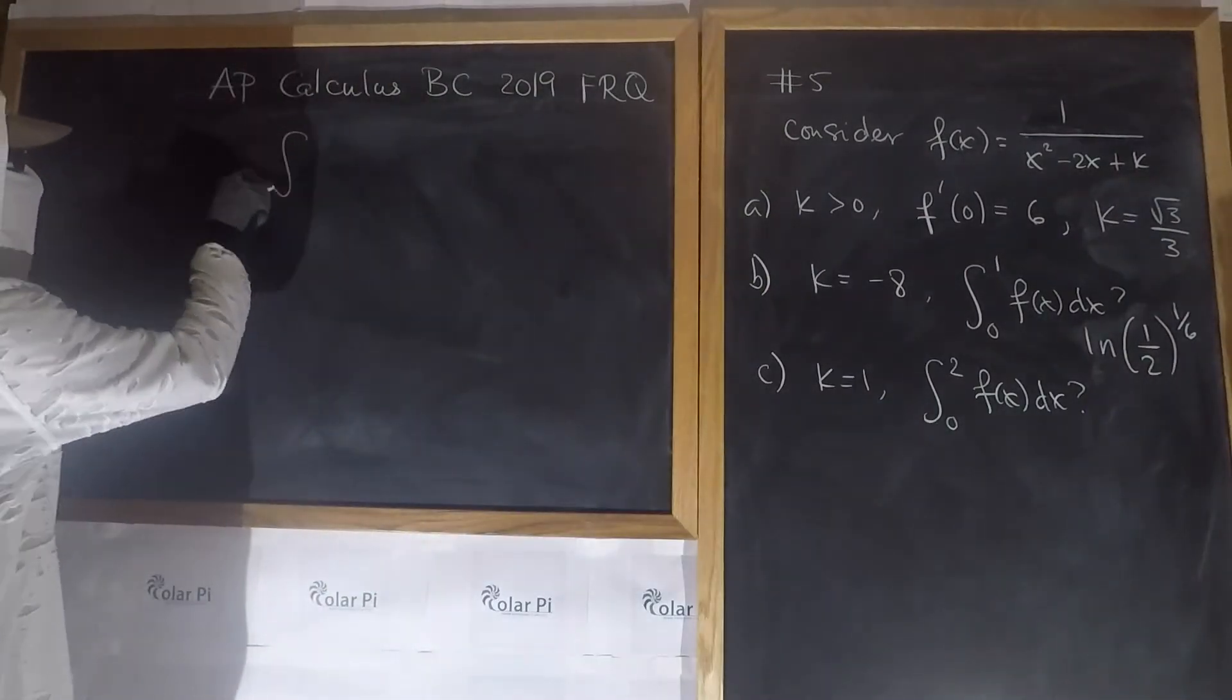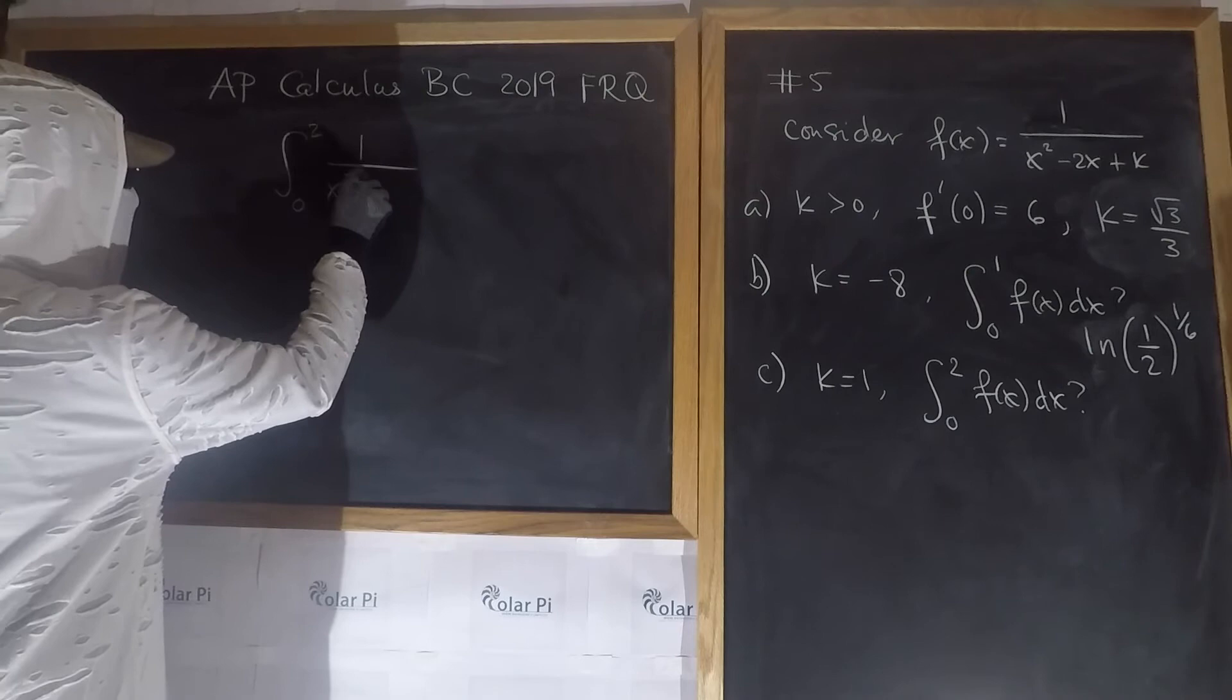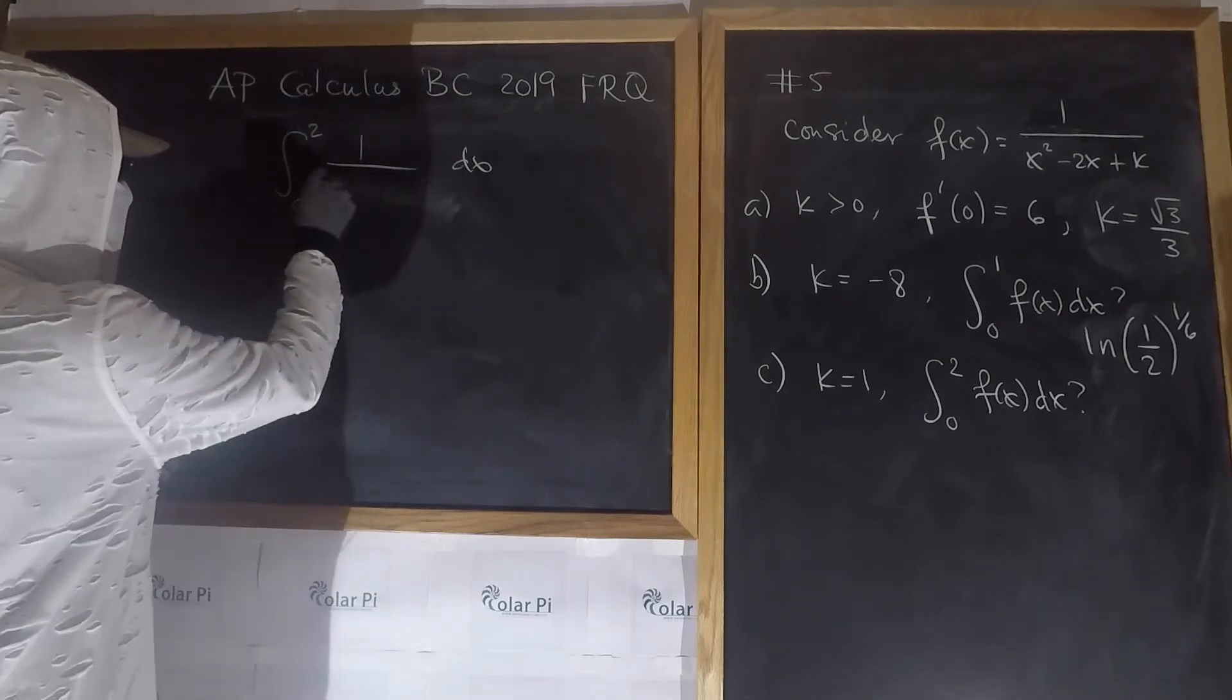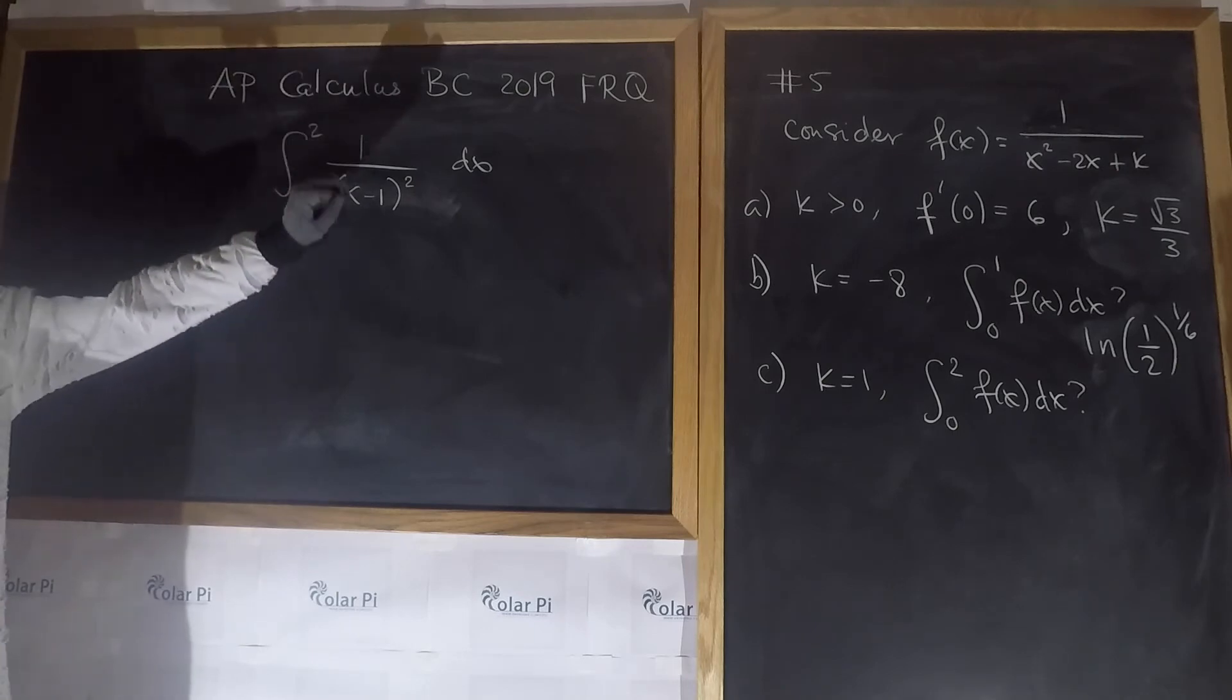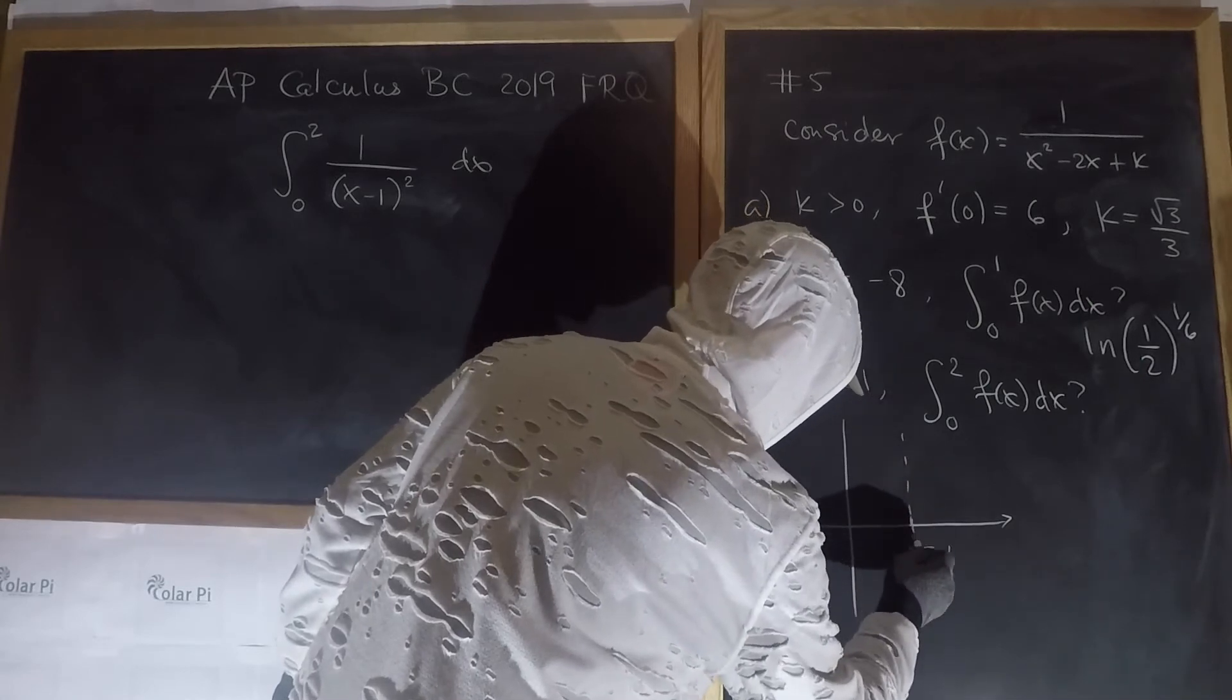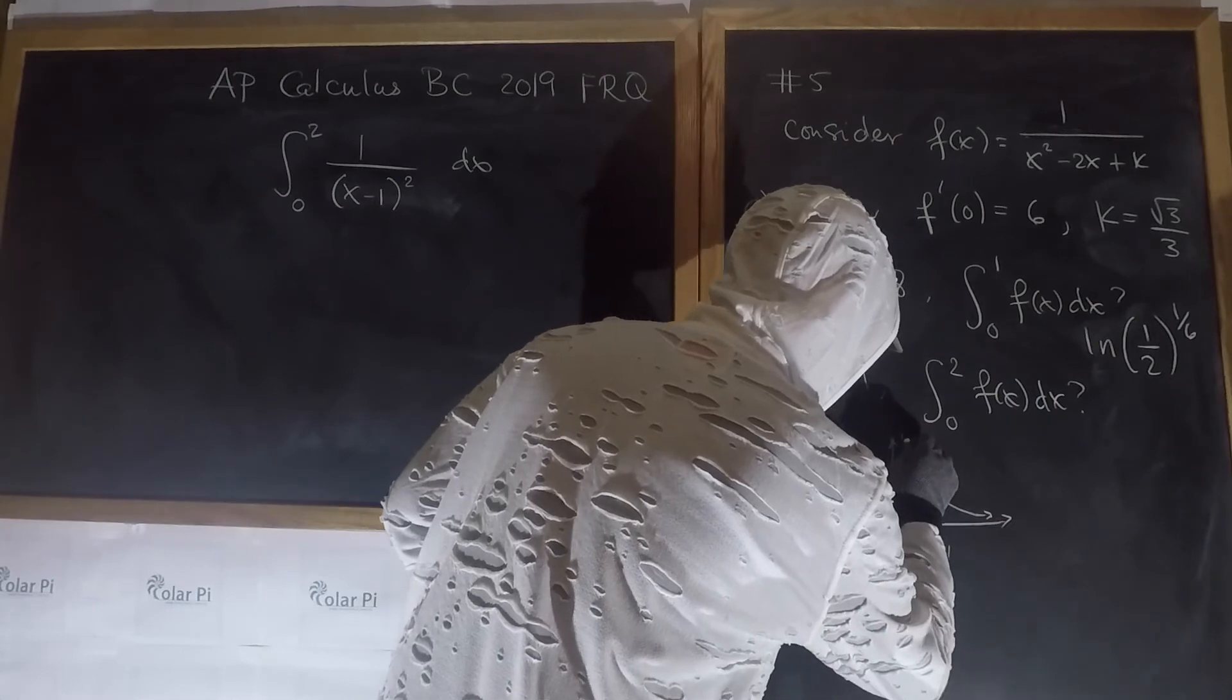And then, C. All that we have is k is equal to 1. And we're doing the integral from 0 to 2 this time, as opposed to 0 to 1. So when K is equal to 1, F turns into 1 over X squared minus 2X plus 1. Notice that this here is a perfect square quadratic. And it is, in particular, X minus 1 all squared. We go from 0 to 2. But this function has a vertical asymptote at X equals 1. So here's what we've got. If this is X equals 1, then this function 1 over X minus 1 all squared looks like this.